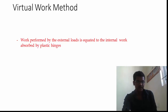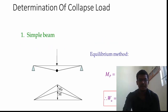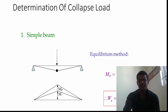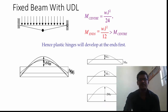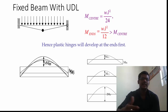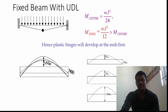Now we will look at the virtual work method. In the virtual work method, the work performed by external loads equals the internal work. For a simple beam, the virtual moment is WL/4 and equating gives the ultimate load as 4MP/L. For a fixed beam with UDL, the central moment is WL²/24 and the end moment is WL²/12. Since the moment at the ends is greater, the W value works out to MP × 12/L².